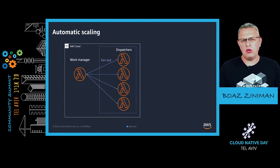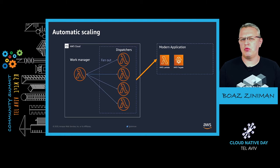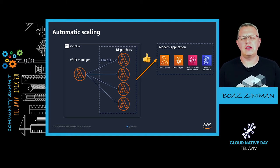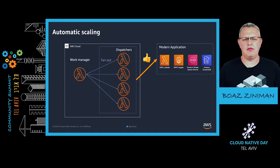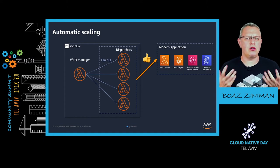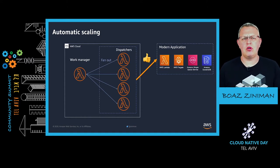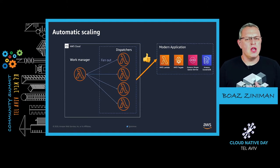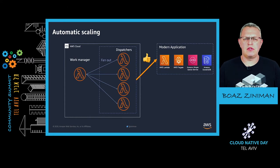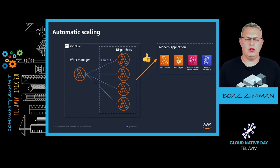When you're talking to external systems with this type of application — whether it's a modern application running on additional serverless or Lambda functions, serverless containers with AWS Fargate, a queuing system, or even a NoSQL database like Amazon DynamoDB — in most cases, those systems will be able to scale according to your system and handle the load you're putting on them.